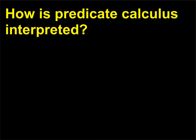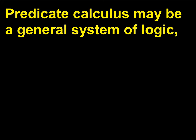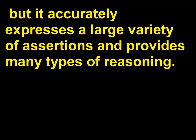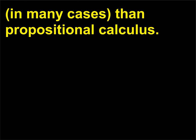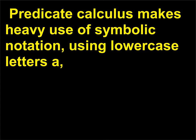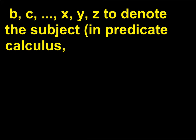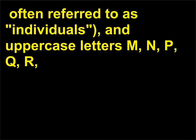Predicate calculus may be a general system of logic, but it accurately expresses a large variety of assertions and provides many types of reasoning. It is definitely more flexible than Aristotle's syllogisms and more useful, in many cases, than propositional calculus. Predicate calculus makes heavy use of symbolic notation, using lowercase letters a, b, c, x, y, z to denote the subject (often referred to as individuals), and uppercase letters M, N, P, Q, R to denote predicates.